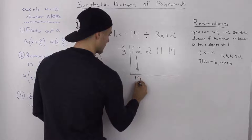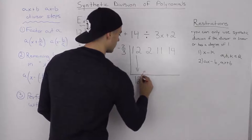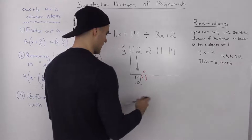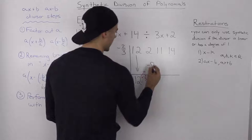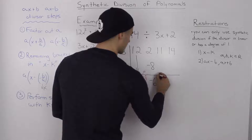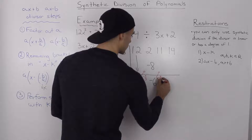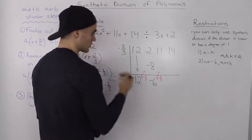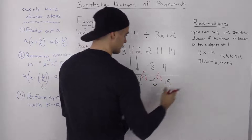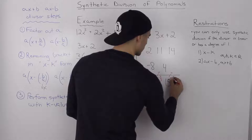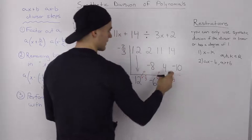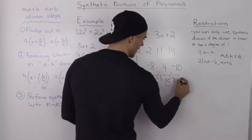The same process applies. The first term, 12, comes down. Then we multiply 12 by our k value of negative 2 over 3, which gives us negative 8. Then 2 plus negative 8 gives us negative 6. We multiply negative 6 by negative 2 over 3, giving us positive 4. Then 11 plus 4 gives us 15. Next, 15 times negative 2 over 3 gives us negative 10. And finally, 14 plus negative 10 gives us 4.